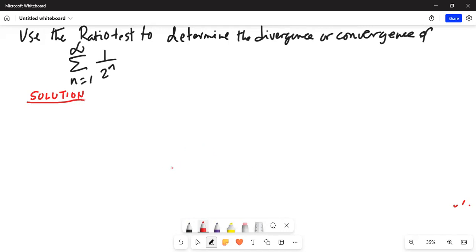The given series is summation n equal to 1 through infinity, 1 over 2 to the power of n.